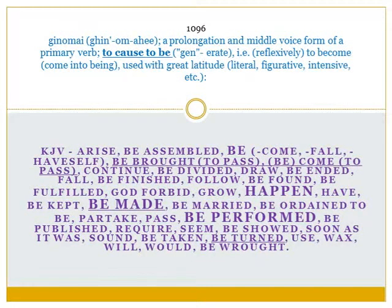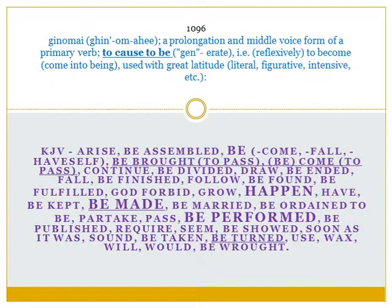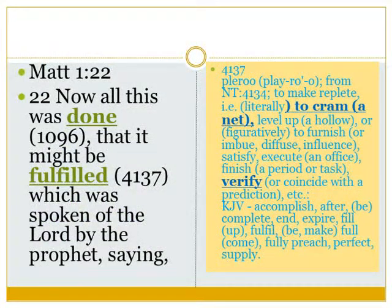Here is the Strong's definition for the Greek word translated in this verse as 'fulfilled.' It is Greek word 1096, a prolongation and middle voice form of a primary verb meaning to cause to be, to become. It is used with great latitude — to be, to happen, to be made. This is the same word translated in John chapter 1 as 'the word was made flesh and dwelt among us.'